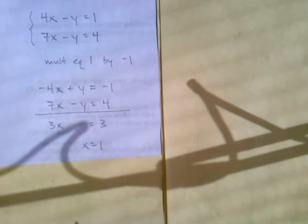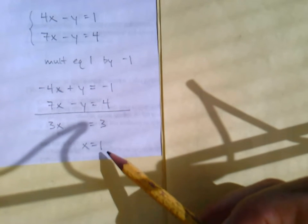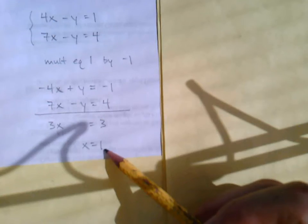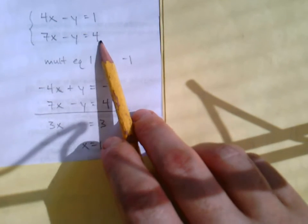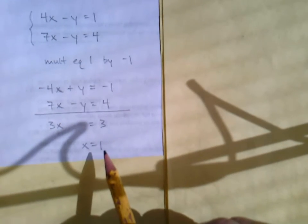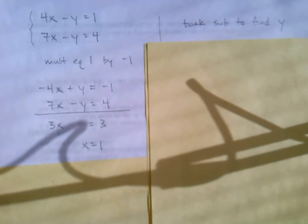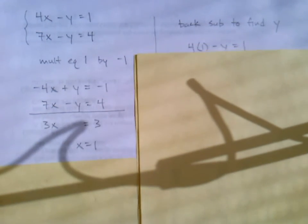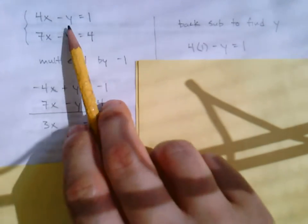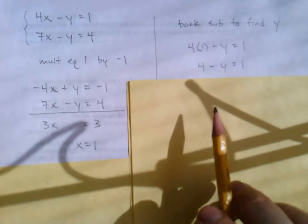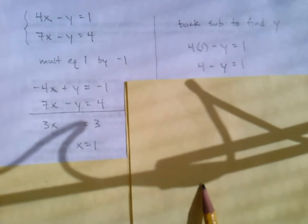We just did the majority of the work getting here to x equals 1, and we're ready to move on. So we're going to very quickly be able to find the value of y. We're going to take this value of x, do back substitution, and we've got the choice into either of these two equations here. Doesn't seem like one is better than the other, so I'm going to take one and just plug it in to that first equation, back sub our x value to find y. So let's say 4 times 1 minus y equals 1, back subbing into that first equation again. Well, that means 4 minus y equals 1. And well, wouldn't it have to be 4 minus 3? So y equals 3.